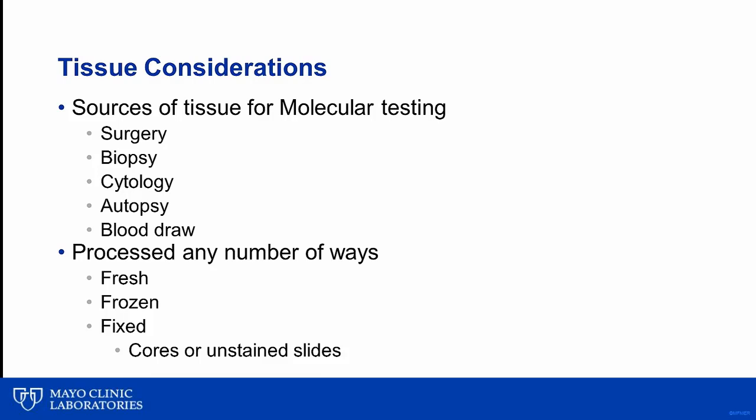Sources for obtaining tissue for molecular testing include various surgical procedures, including small biopsy specimens, cytology preparations, and even liquid biopsies for solid tumors. The tissue obtained from any of the first four procedures can be processed in a number of different ways. While fresh or frozen tissue often leads to the best quality nucleic acid, it is fairly rare in routine practice and difficult to obtain and store long-term. Fixed tissue is, by far, the most common source of nucleic acid for molecular testing of solid tumors.